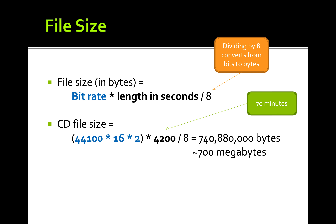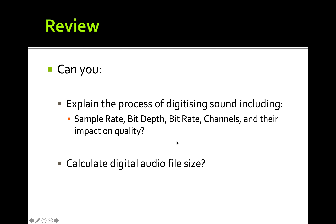For file size: file size = bit rate × length in seconds ÷ 8 (to convert bits to bytes). For example, a CD-quality audio file of about 4,200 seconds gives approximately 700 megabytes, which corresponds to roughly 70 minutes of sound. In summary, this lecture covered sample rate, bit depth, bit rate, channels (mono or stereo), their impact on quality, and how to calculate audio file size. Thank you very much, bye.